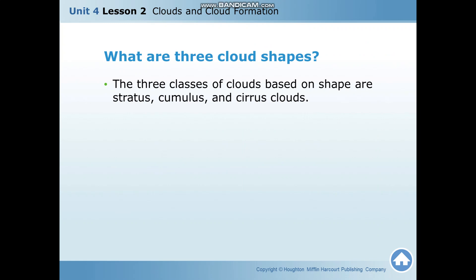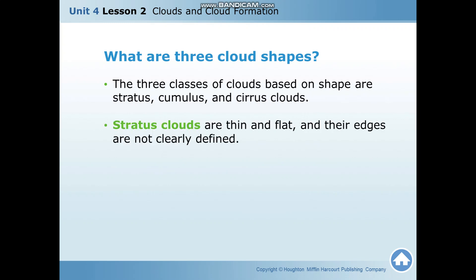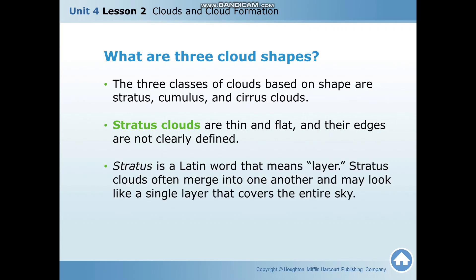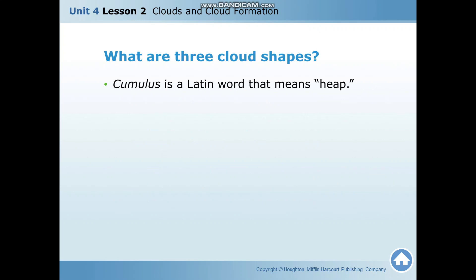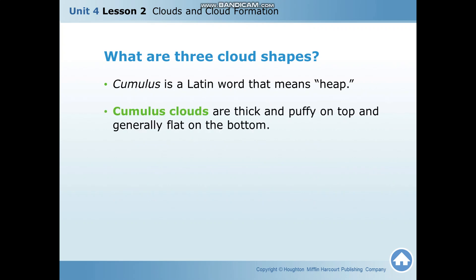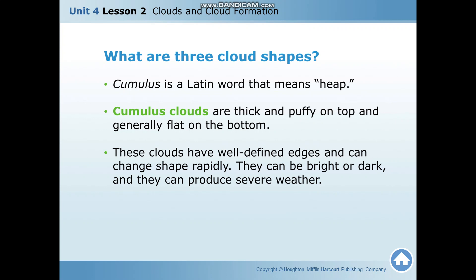What are the three cloud shapes? The three classes of clouds based on shape are stratus, cumulus, and cirrus clouds. Stratus clouds are thin and flat and their edges are not clearly defined. Stratus is a Latin word meaning 'layer,' so stratus clouds are layered clouds. They often merge into one another and may look like a single layer that covers the entire sky. Cumulus is a Latin word meaning 'heap.' Cumulus clouds are thick and puffy on top and generally flat on the bottom. They have well-defined edges, can change shape rapidly, can be bright or dark, and can produce severe weather.